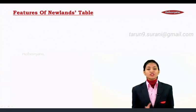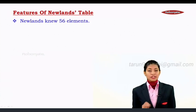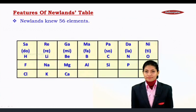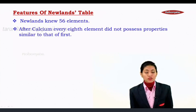Let us move on to the features of Newlands table. Newlands during that time knew only about 56 elements, so he arranged those 56 elements.